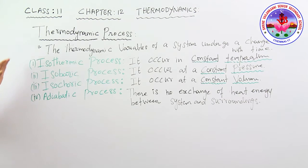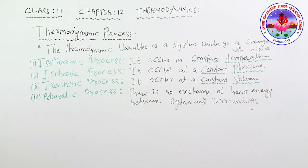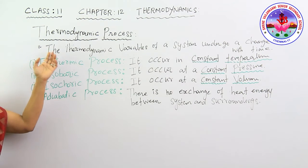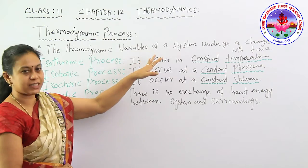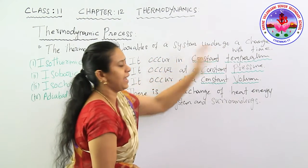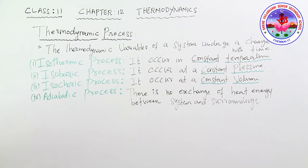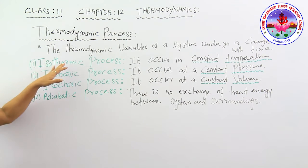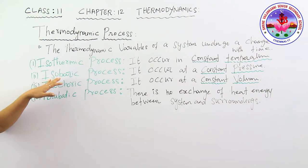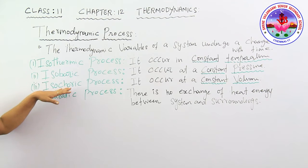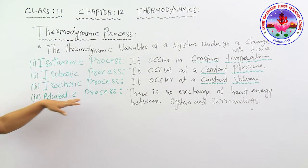The thermodynamic process is a process occurring with the thermodynamic variables of a system which undergo change with time. The different types of thermodynamic processes are: isothermal process, isobaric process, isochoric process, and adiabatic process.